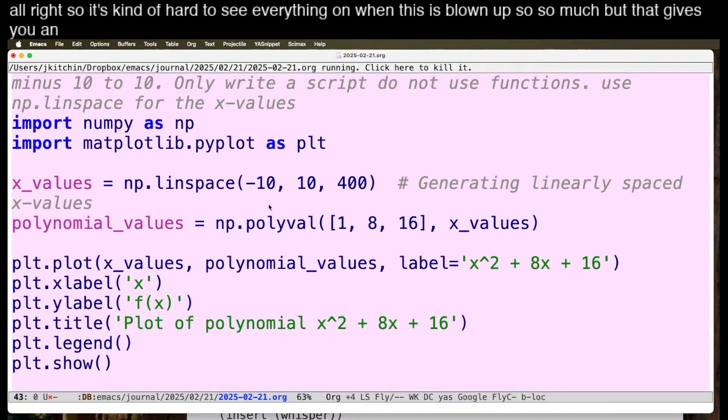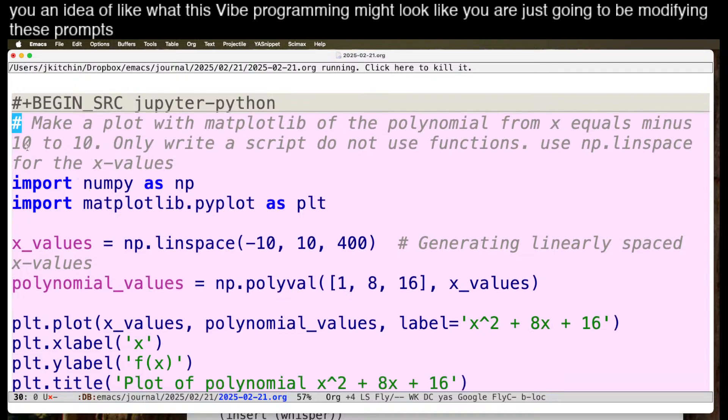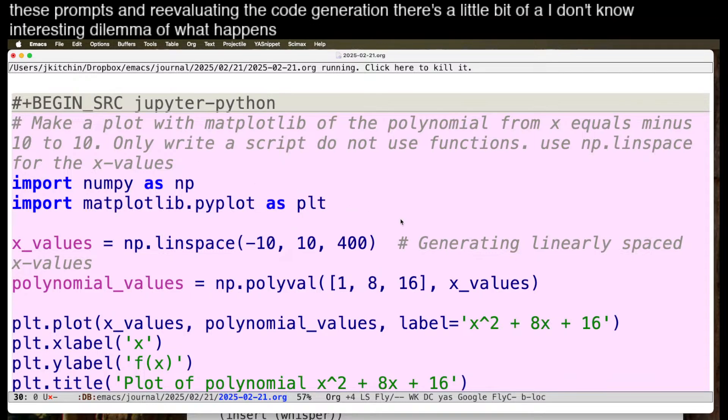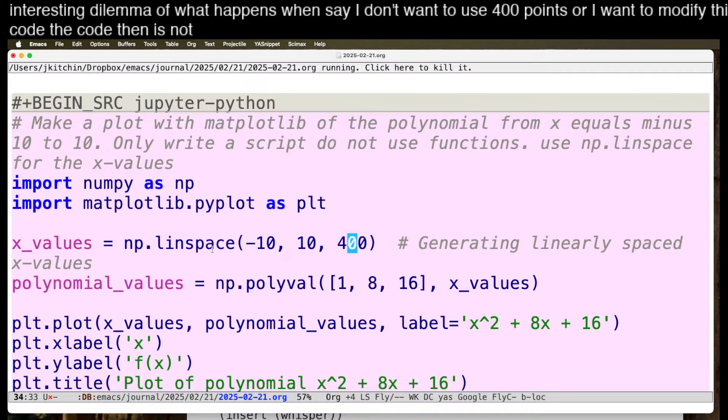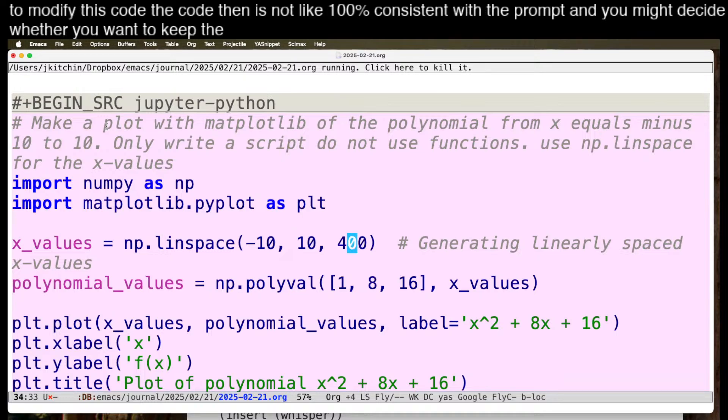But that gives you an idea of what this Vibe programming might look like. You are just going to be modifying these prompts and re-evaluating the code generation. There's a little bit of an interesting dilemma of what happens when, say, I don't want to use 400 points or I want to modify this code. The code then is not 100% consistent with the prompt. And you might decide whether you want to keep the prompt in there for remembering how you got there.